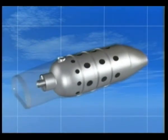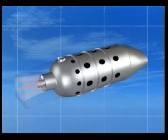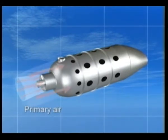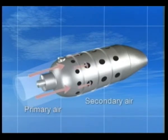Of the total mass of air passing to the combustion chambers, approximately 25%, known as primary air, enters the flame tubes through the flame tube orifice and is used for combustion. The remainder of the air passes along the outside of the flame tubes, entering through dilution holes in the side of the tubes, and is used for cooling.